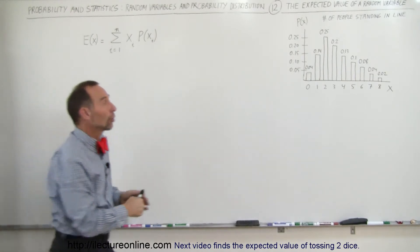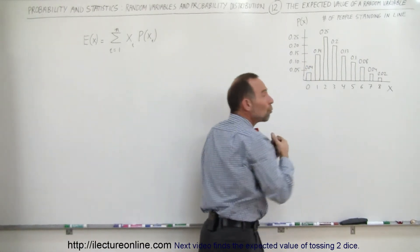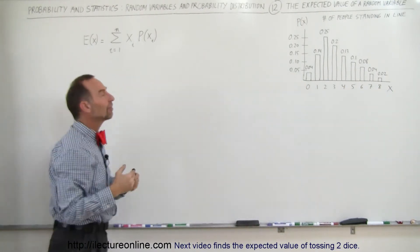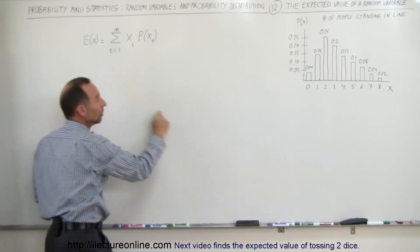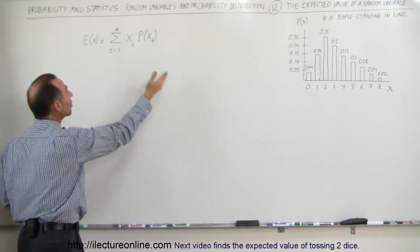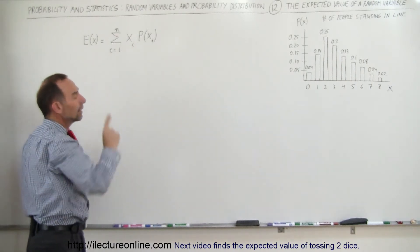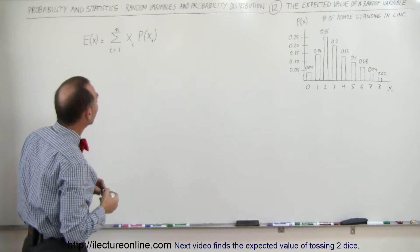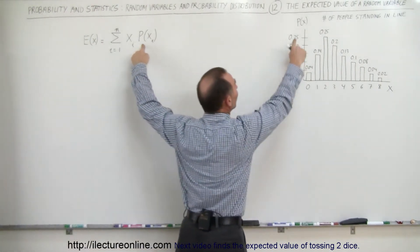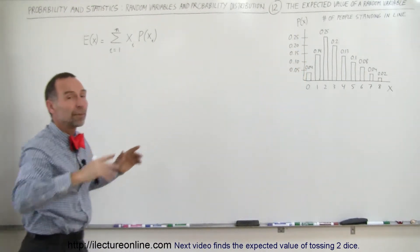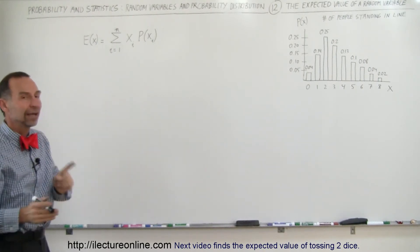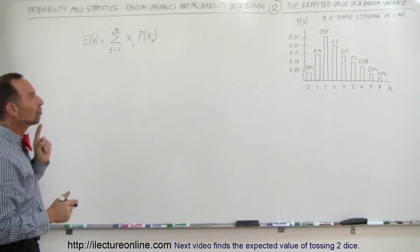For numbers that are more likely to occur — that have a higher probability — we weigh them more heavily than numbers that are less likely to occur. We do that by multiplying each value, anywhere from zero to eight, times the probability of that occurrence, then sum them all up. There's no need to divide because the probabilities are already normalized — they sum to one — so no division is necessary.